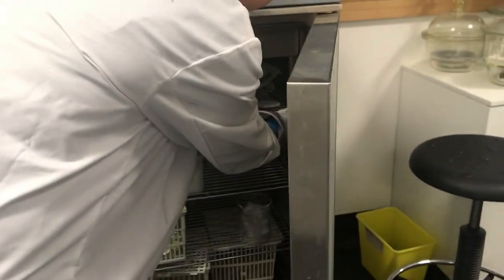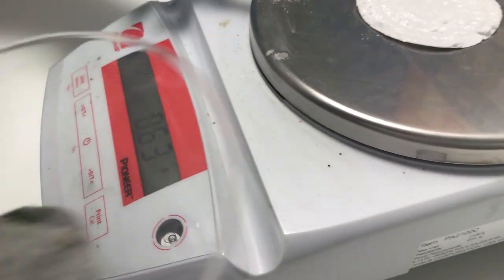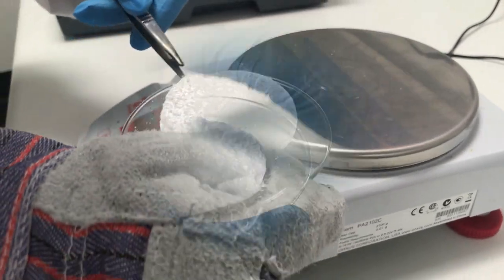After around 10 minutes, remove the watch glass from the oven remembering to use gloves as the watch glass will be hot. Weigh the filter paper containing the crystals and record the weight. Subtract the weight of the filter paper from this and you'll be left with the actual weight of your crystals.